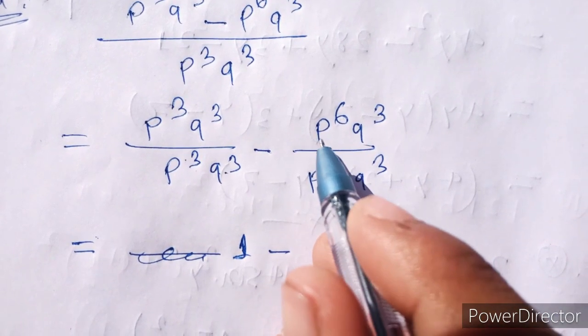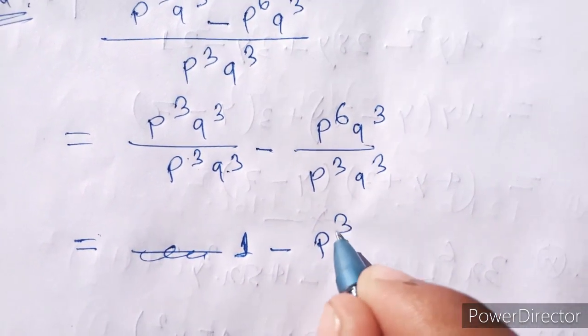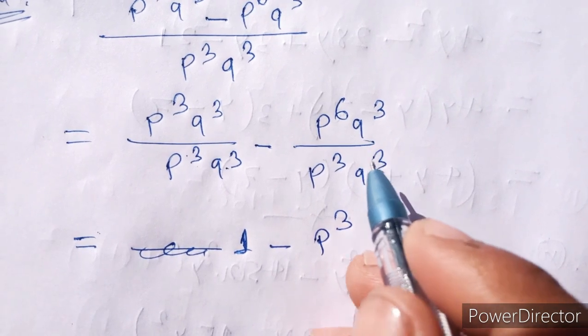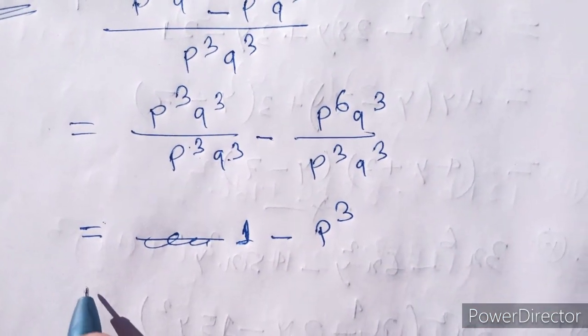It's equal to P cube or P to the power 6. P to the power 3 over Q cube, 1 over 1 minus P cube.